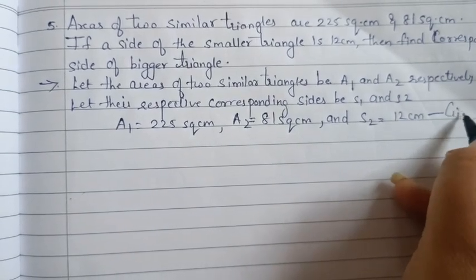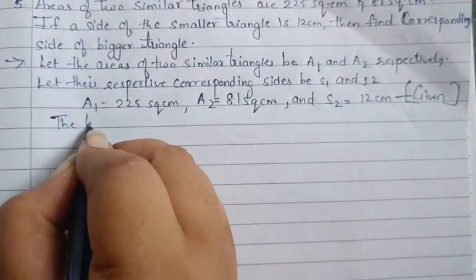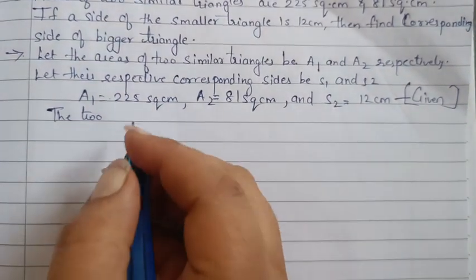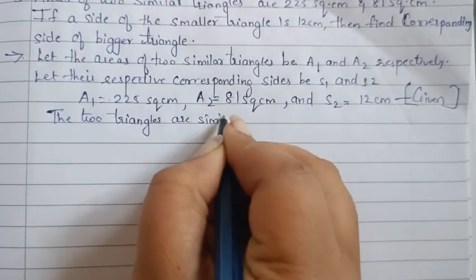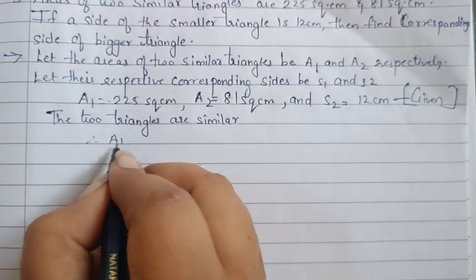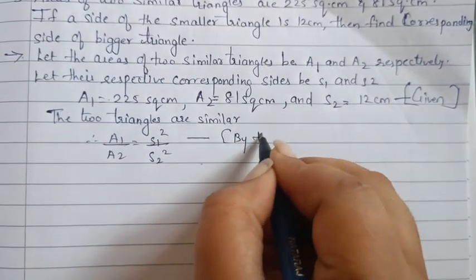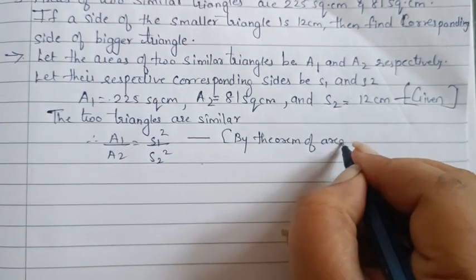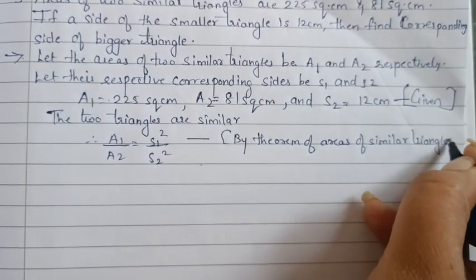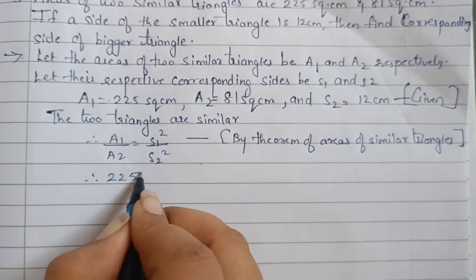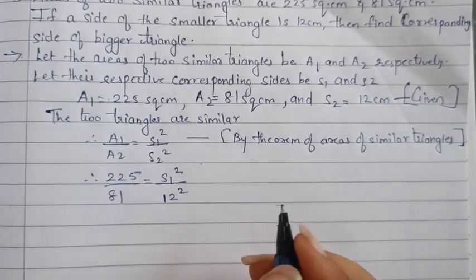So area 1 is equal to 225 square centimeters, area 2 is equal to 81 square centimeters, and S2 is equal to 12 centimeters — this is given. The 2 triangles are similar. Therefore, area 1 upon area 2 is equal to side 1 square upon side 2 square, by the theorem of areas of similar triangles. Substituting: 225 upon 81 is equal to side 1 square upon 12 square.